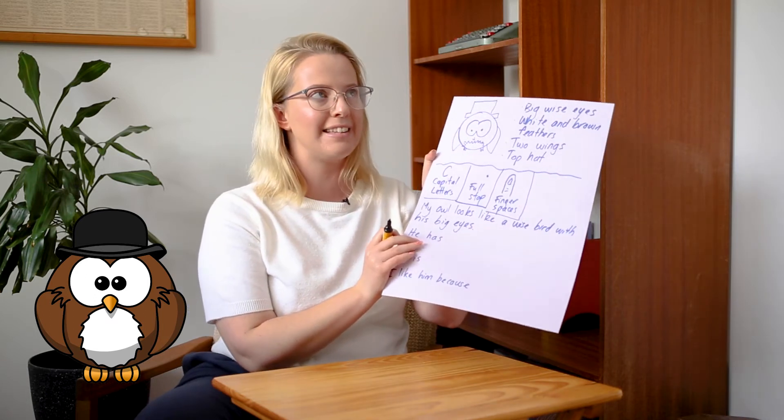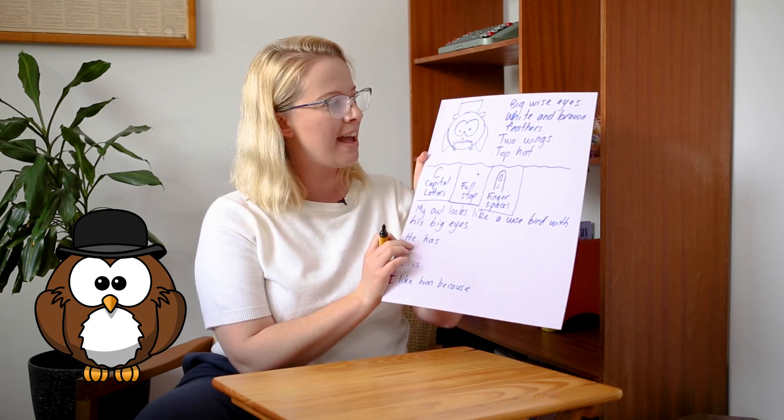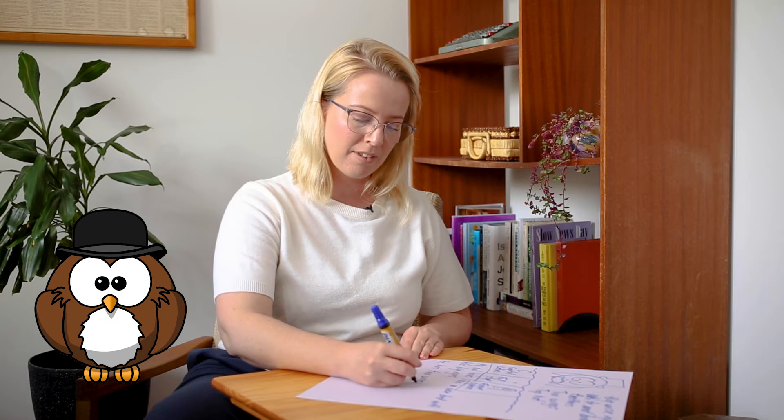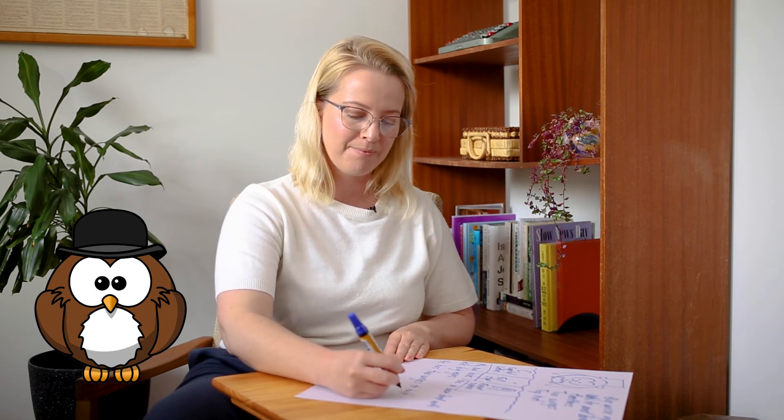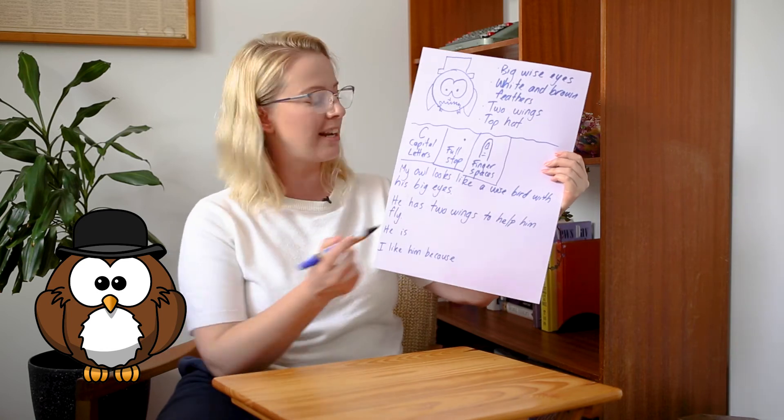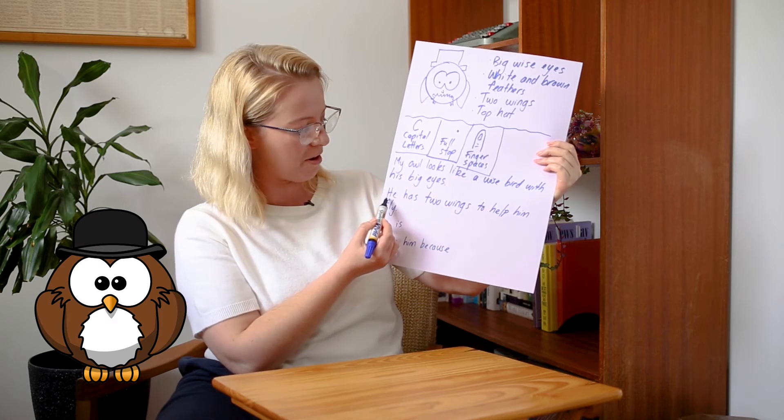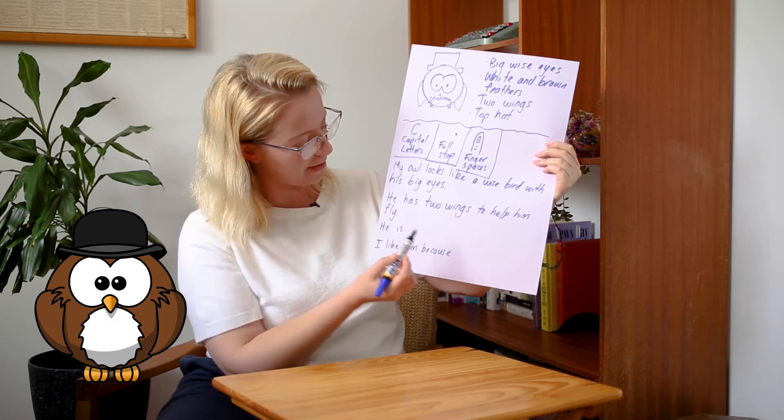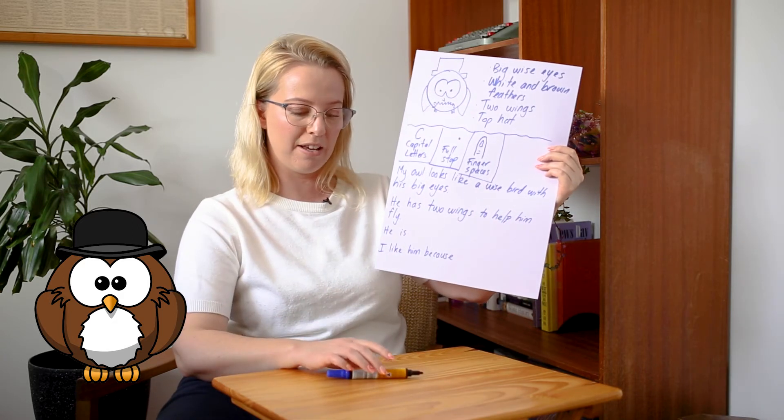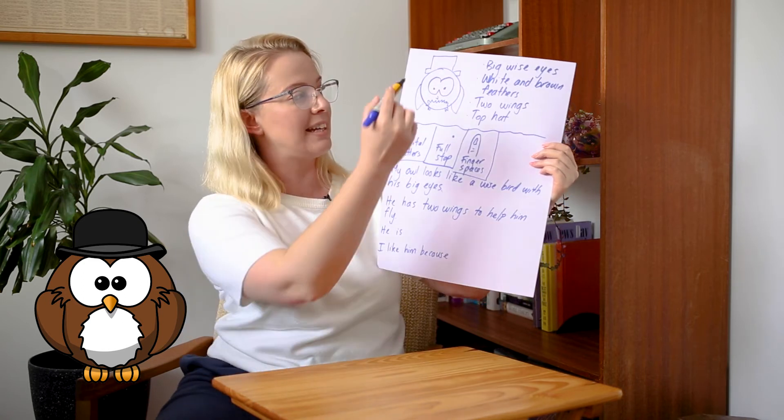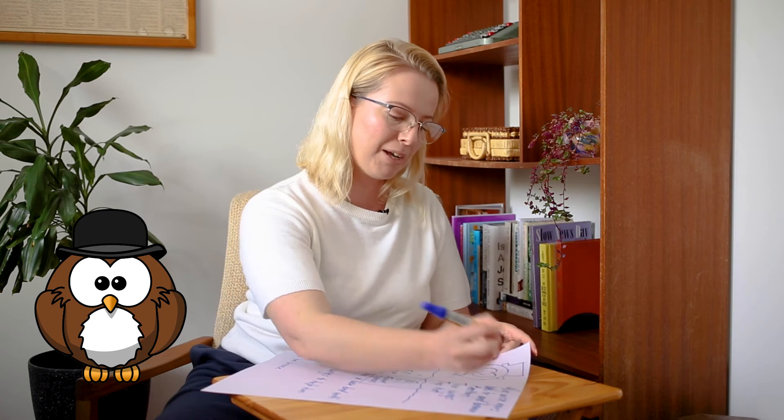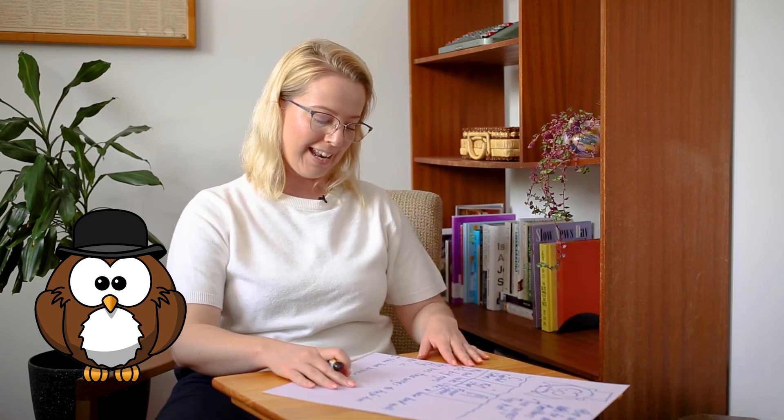Our second one is, he has. Hmm. What could I put up here? He has, I'm going to talk about his two wings. He has two wings. And what do his wings do? They help him fly. So I'm going to put that in. To help him fly. Full stop at the end. As we're going, I'm going to keep double checking that I'm using these three parts. So capital letters, yes, I've started them off with capital letters. Full stop at the end. And finger spaces. Let me get my finger to check. I've got good finger spaces between my words. And I can tick the two ideas off that I've already used. So tick big wise eyes and tick two wings. Now I've got two more sentences to write.